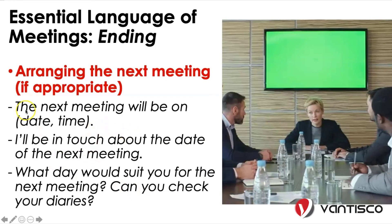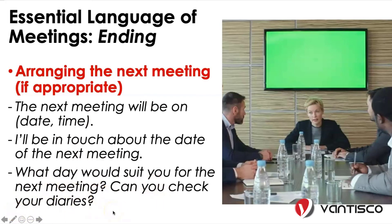Closing the meeting: 'The next meeting will be on [date and time].' أو إذا أنا ما عارف إمتى حيكون الاجتماع القادم ممكن أقول: 'I'll be in touch about the date of the next meeting.' أو: 'What day would suit you for the next meeting? Can you check your diaries?' ممكن نسأل ونحدد التاريخ قبل ما يخلص الميتينج.